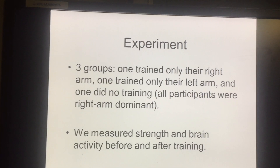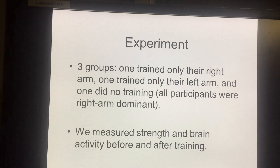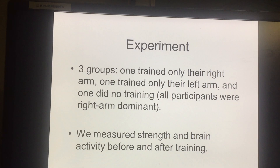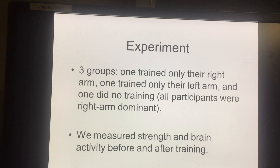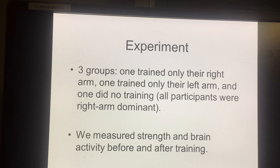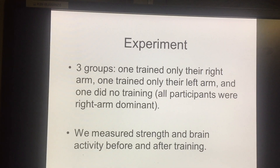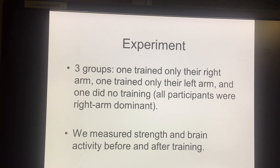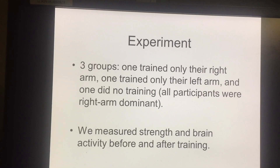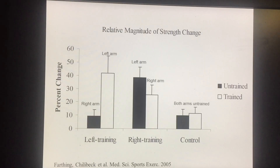In this first experiment, we had three groups: one trained only using their right arm, one trained only using their left arm, and one did no training. All participants were right-arm dominant. We assessed strength and brain activity before and after the training program, which was around eight weeks long.